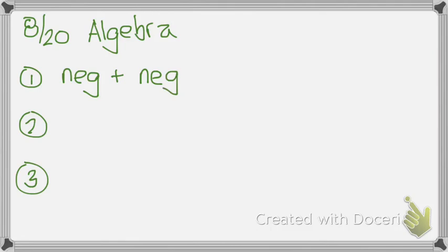On your sheet of paper, I need you to do three problems for me. The three problems I need you to show me is I need you to show me a negative plus a negative. Come up with an example of a negative number plus a negative number. I want you to come up with a positive plus a negative. And then I want you to come up with a negative minus a negative.